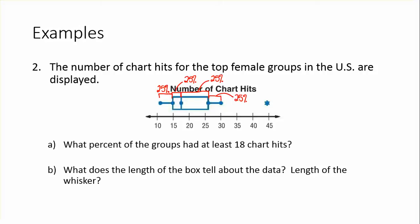Looking at right around 18 chart hits — which is approximately where the median is — we want everybody from that point upward. That's 25% plus 25%, so 50% of the groups had at least 18 chart hits.